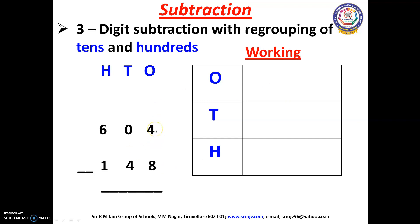In the 1's place we have 4 and 8. We cannot subtract 8 from 4, so we have to borrow from the 10's place. But in the 10's place we have 0, so we cannot borrow from there. We have to borrow from the 100's place. Here we have 6; this 6 will change into 5 and 0 will change into 10. Now we can get 1 from the 10's place, so 10 will change into 9 and 4 will change into 14.